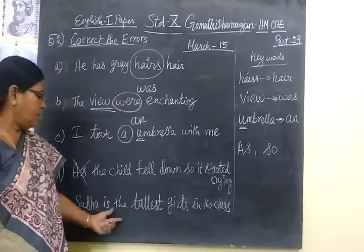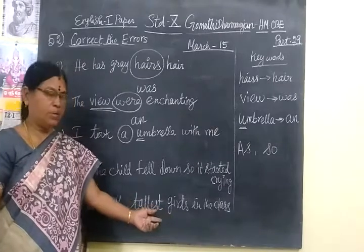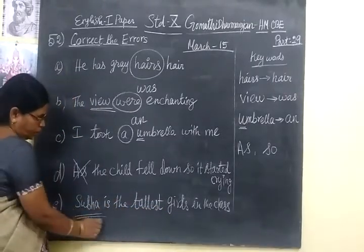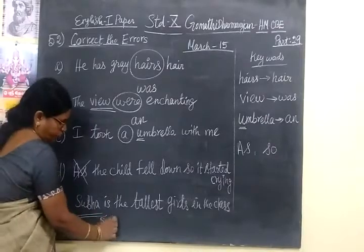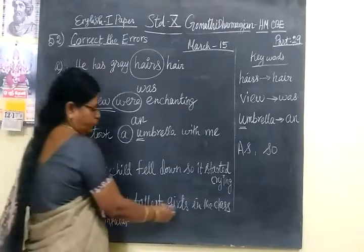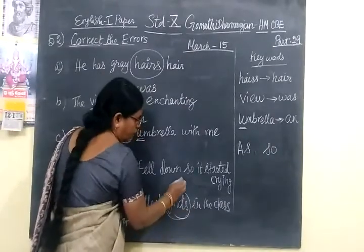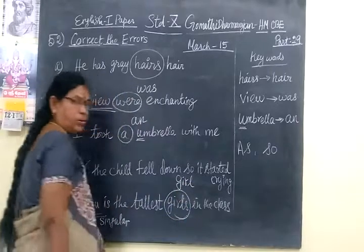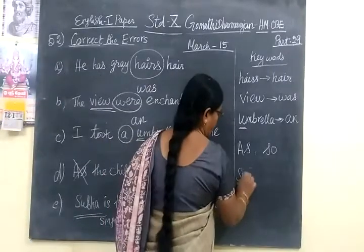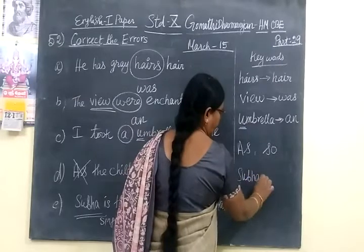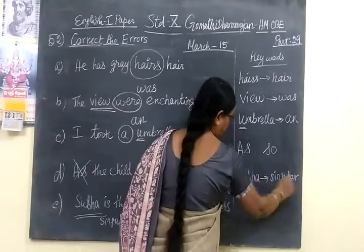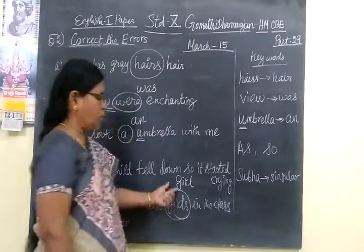'Subha is the tallest girls in the class.' This is superlative form. Here, Subha is singular. Since it is singular, you have to use only 'girl' — not 'girls.' So the correction is: 'Subha is the tallest girl in the class.' The keyword is that Subha is singular, so you use 'girl.'